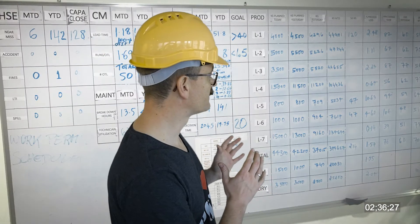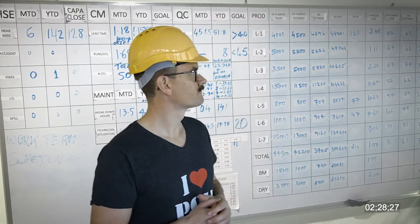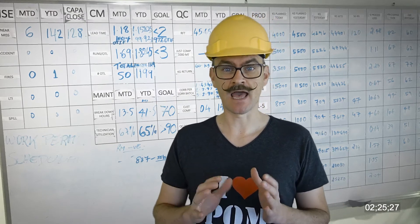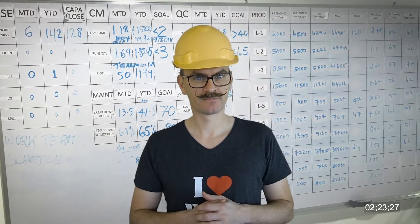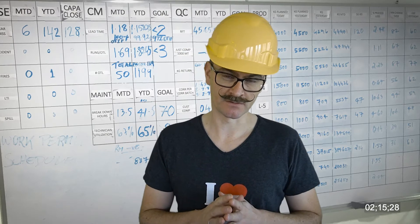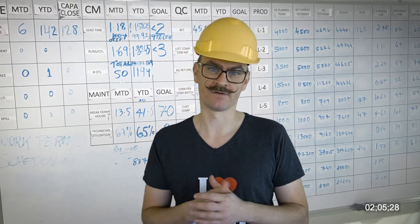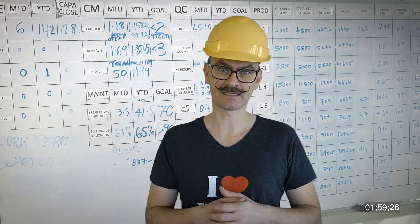Over there is a board collecting the key performance indicators of the whole factory. They measure, for example, average batch lead time, right first time — that is, how many samples were accepted first time in quality control — the throughput times in quality control, returns from customers, utilizations of technicians, planned produced and realized volumes for each production line, and the OEE for each line. These numbers are manually written on a whiteboard for a daily status meeting.